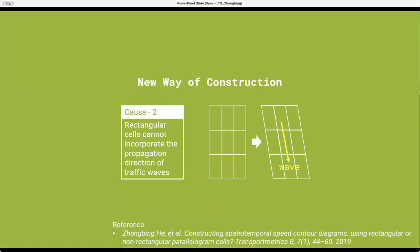As I previously mentioned, another cause of an inaccurate time-space diagram is the fact that the current rectangular way of constructing a time-space diagram does not consider wave speed, which is a key feature of the traffic flow. To fill the gap, we propose a new way of constructing a time-space diagram, which is based on non-rectangular parallelograms instead of the traditional way that is based on rectangular parallelograms.